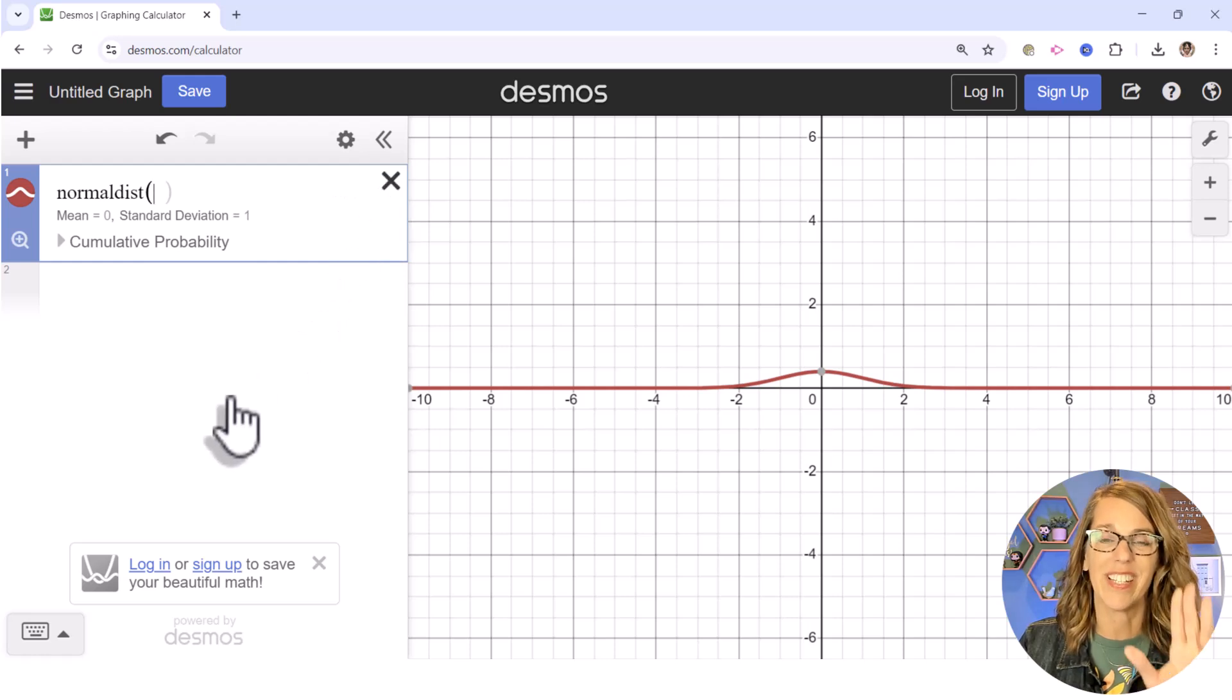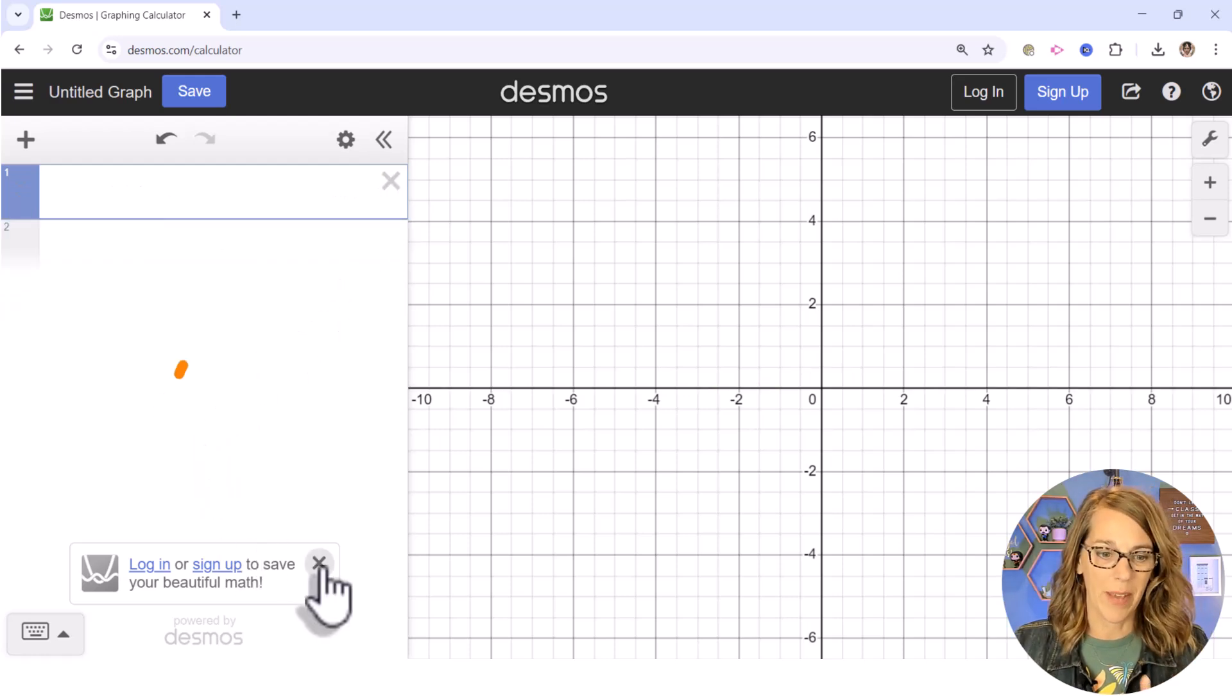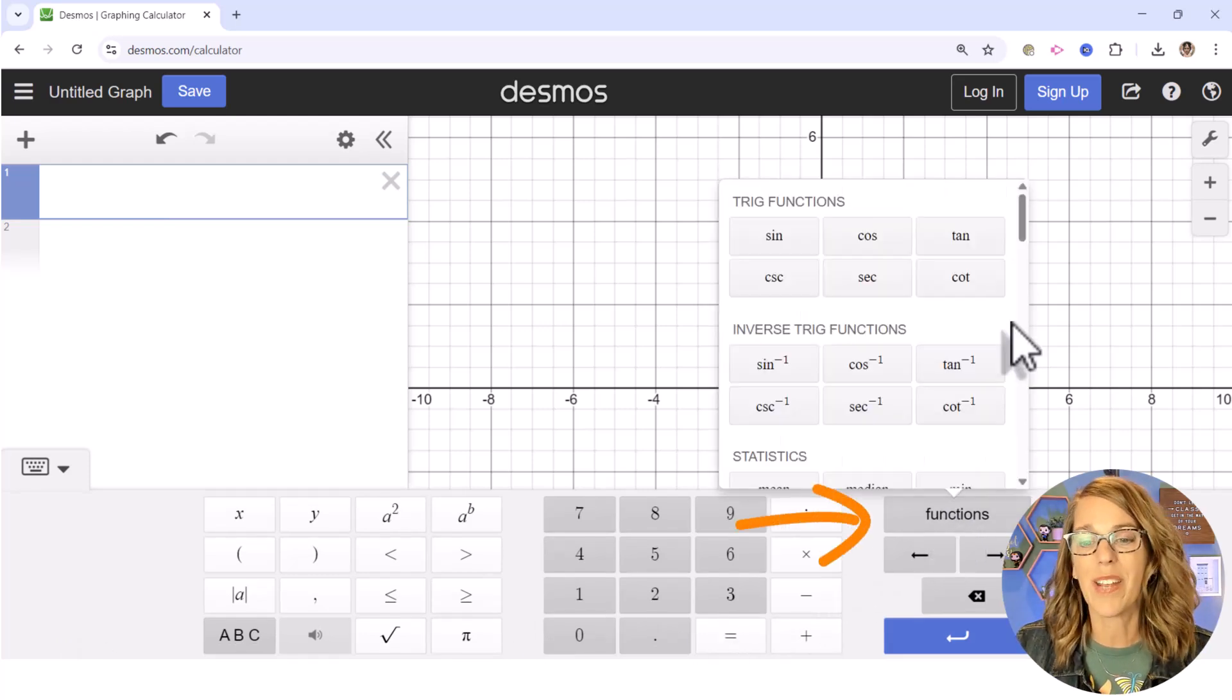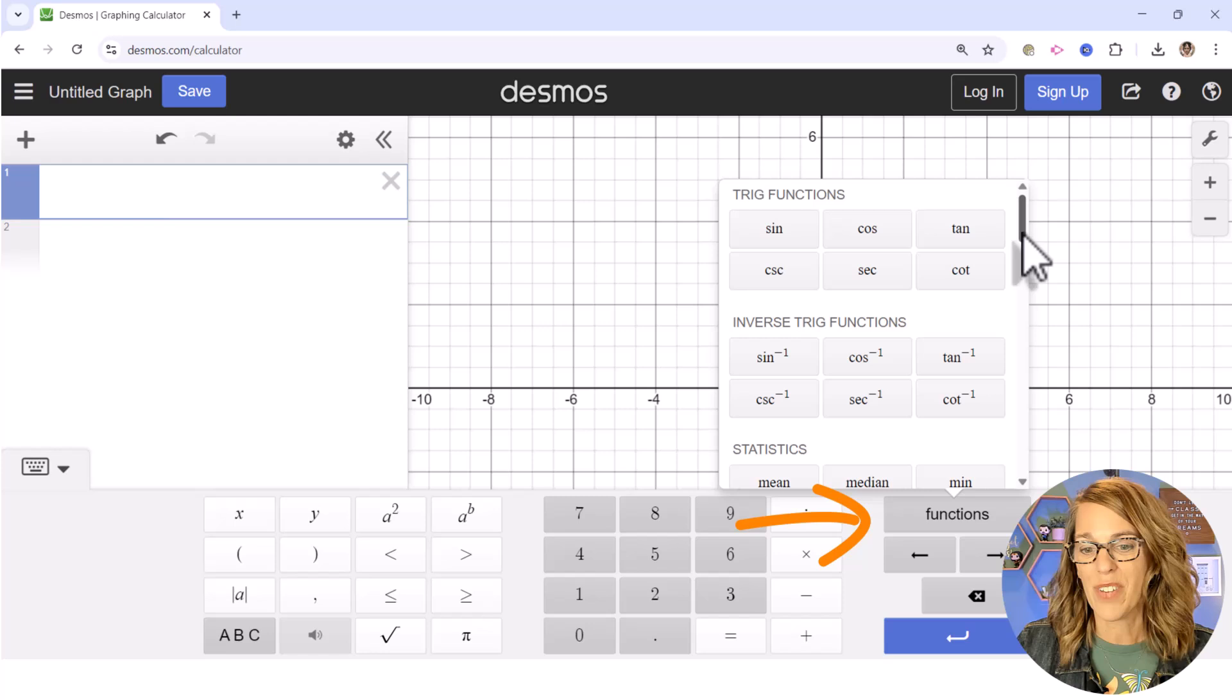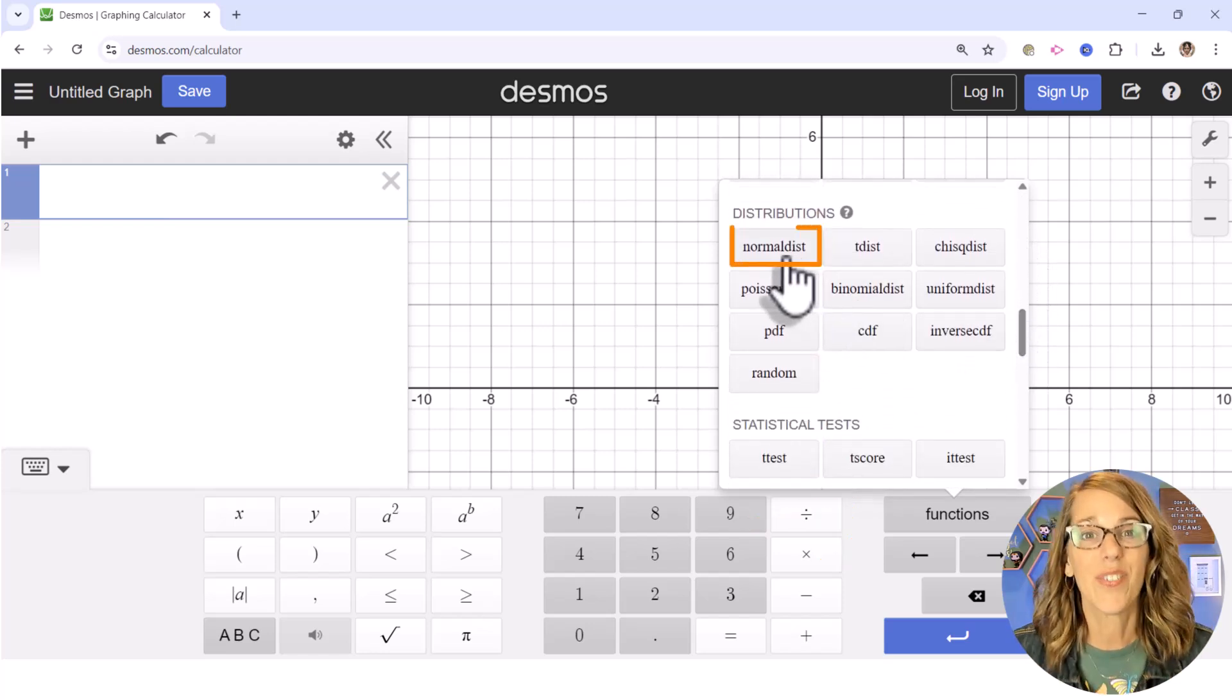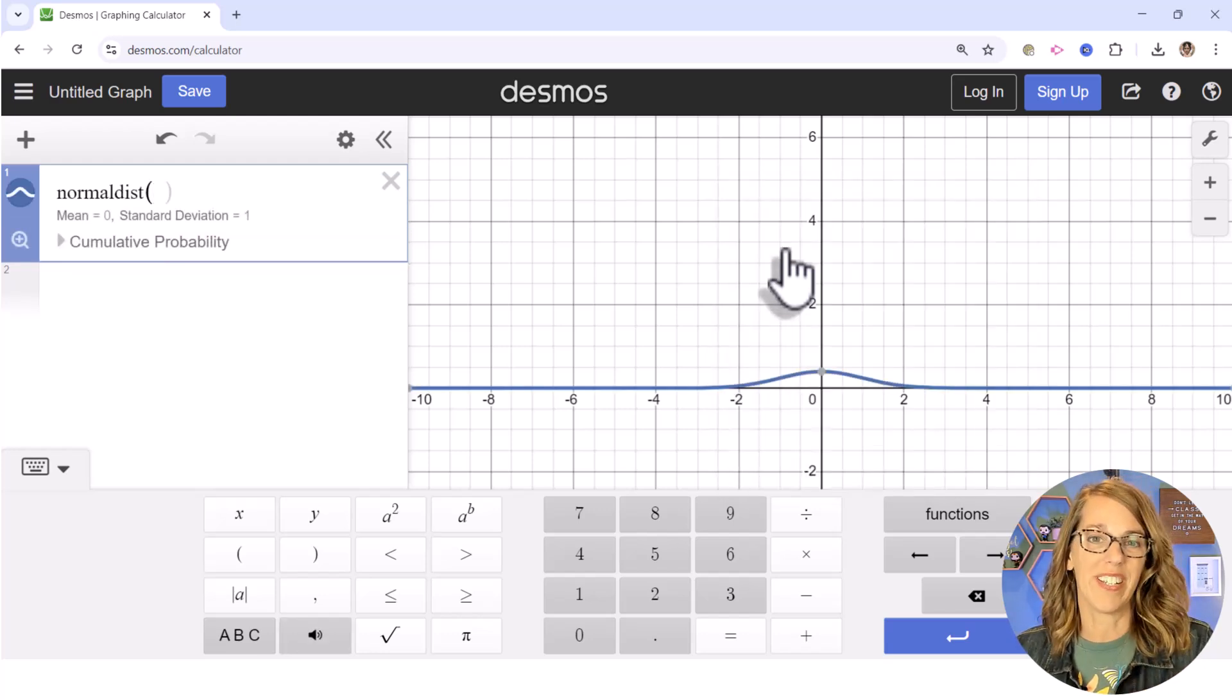Let me x this out, but it's easy to grab from the keypad. I'm going to open up that keypad, go to functions, and if I scroll down, distributions are right here. Here's the normal distribution along with several others. We're going to work on the normal dist today.